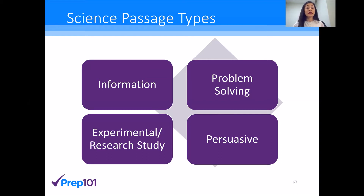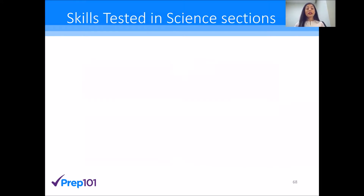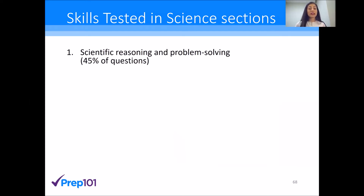The second half covers the skills tested. This is super important because it's something the AAMC has actually published. There are four skills, and let's talk about each one in quite a bit of detail. The first one is what the AAMC calls scientific reasoning and problem solving skills. 45% of the exam will be based on this skill set.